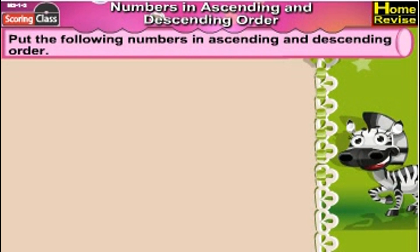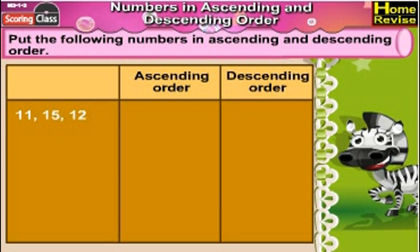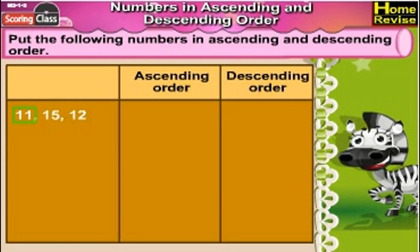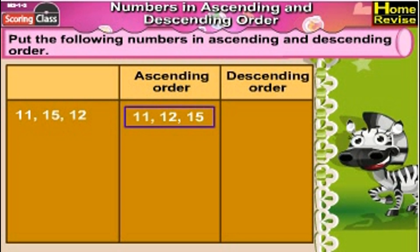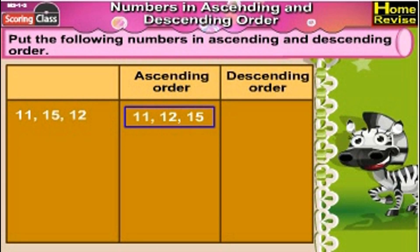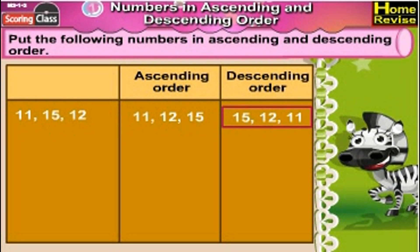Put the following numbers in ascending and descending order: 11, 15, 12. Out of these, which is the smallest number? 11. And which is the last one? 15. So the ascending order would be 11, 12, 15. What will be the descending order? That's exactly opposite of the ascending order. So it is 15, 12, 11.